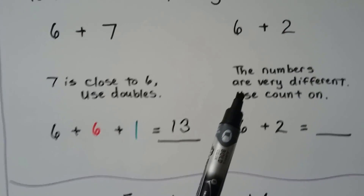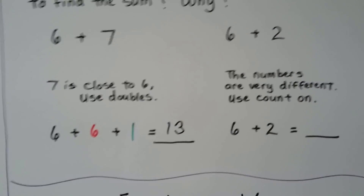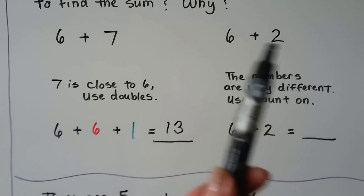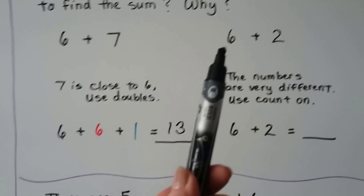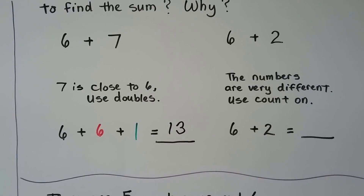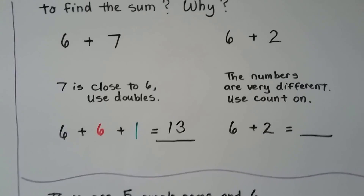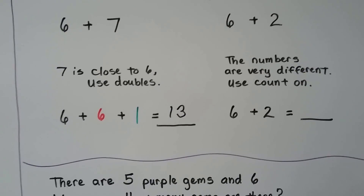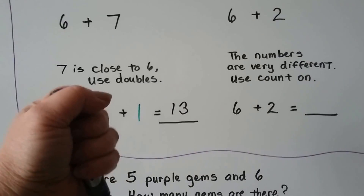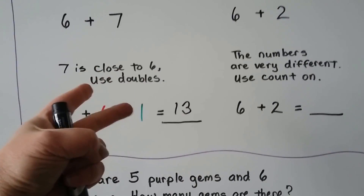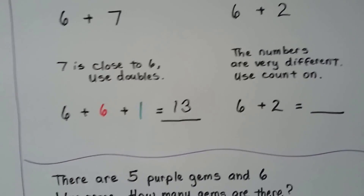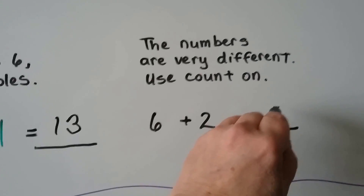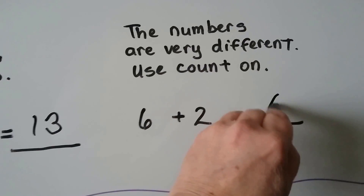For 6 plus 2, it would be better to count on. These numbers are very far apart from each other and the 2 is small. So we start with the larger number 6 and count on 2: 6, 7, 8. 6 plus 2 is equal to 8.